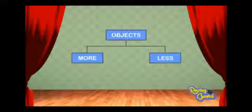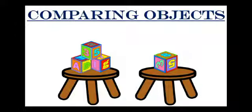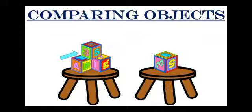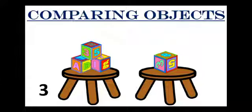Look at these two tables. They have got blocks kept on them. Look at the table on the left hand side. Let's count the blocks. How many blocks are there? One, two, three. This table has got three blocks. Look at the other table. This table has got one block.